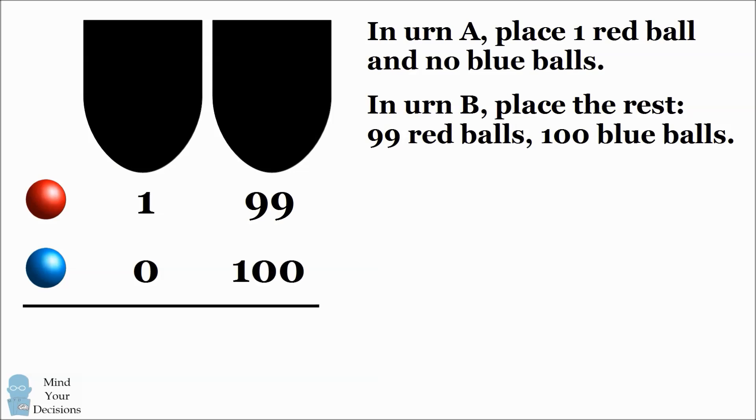Let's calculate the probability of selecting a red ball from each urn. From the first urn, there's only one red ball, so there's a 100% chance that you will select a red ball. In the other urn, there are 99 red balls divided by 199 balls in total. So there's a 99 divided by 199 chance of selecting a red ball from that urn.